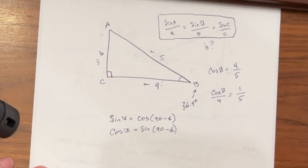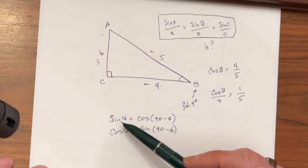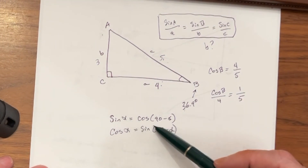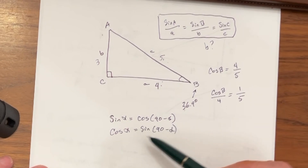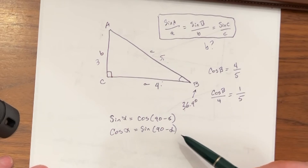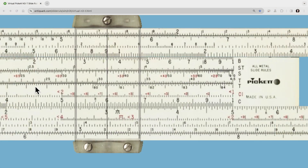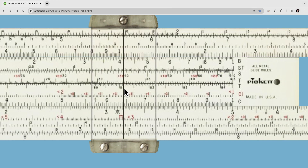As you may recall, the relationship between the sine and the cosine is that sine alpha equals the cosine of 90 degrees minus alpha, and the cosine of alpha equals the sine of 90 degrees minus alpha. So as we look at the slide rule, if we come out to the sine of 40 degrees, we notice that just to the left of us, in red, is the cosine, which is 50 degrees.